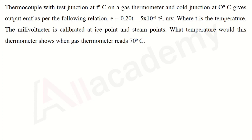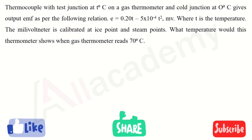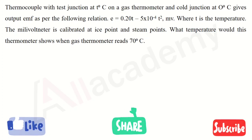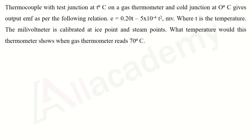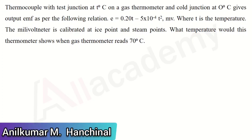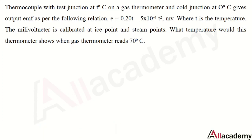The problem statement: a thermocouple with a test junction at T degree Celsius on a gas thermometer and cold junction at 0 degree Celsius gives the output EMF as per the following relation: E = 0.20T − 5×10⁻⁴T² (in millivolts), where T is the temperature. The millivolt meter is calibrated at ice point and steam point. What temperature would this thermometer show when the gas thermometer reads 70°C?